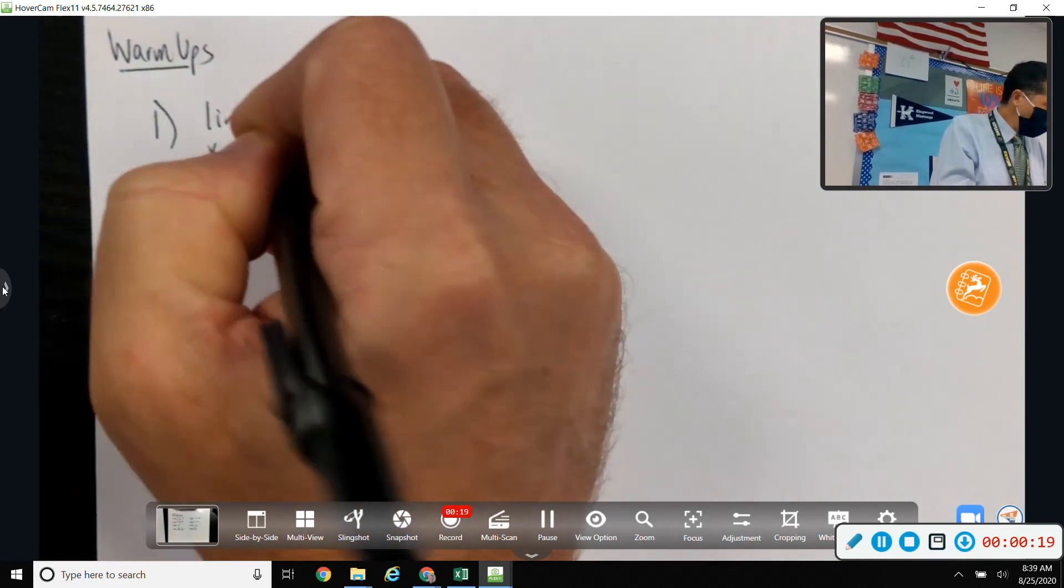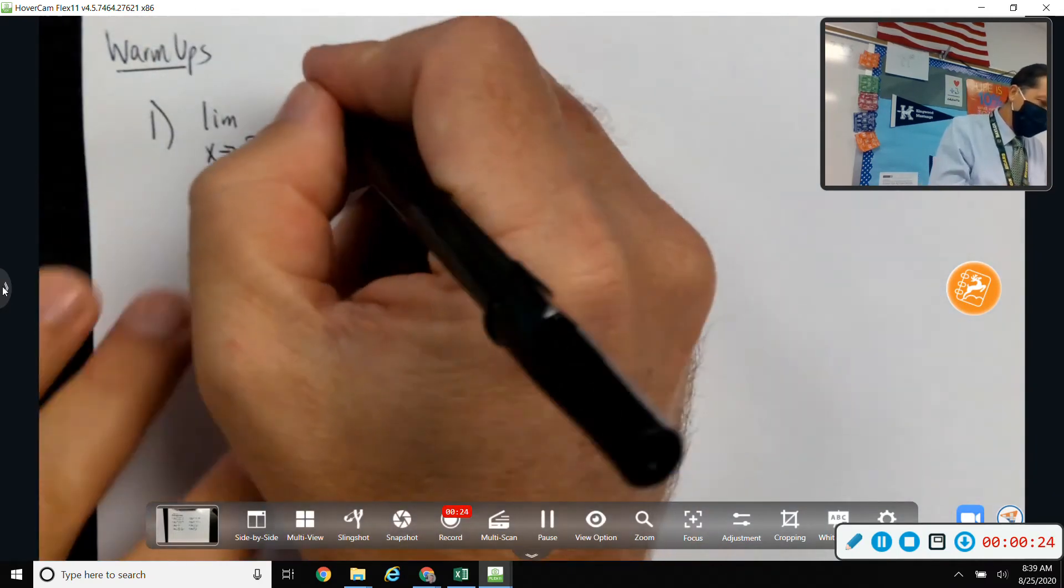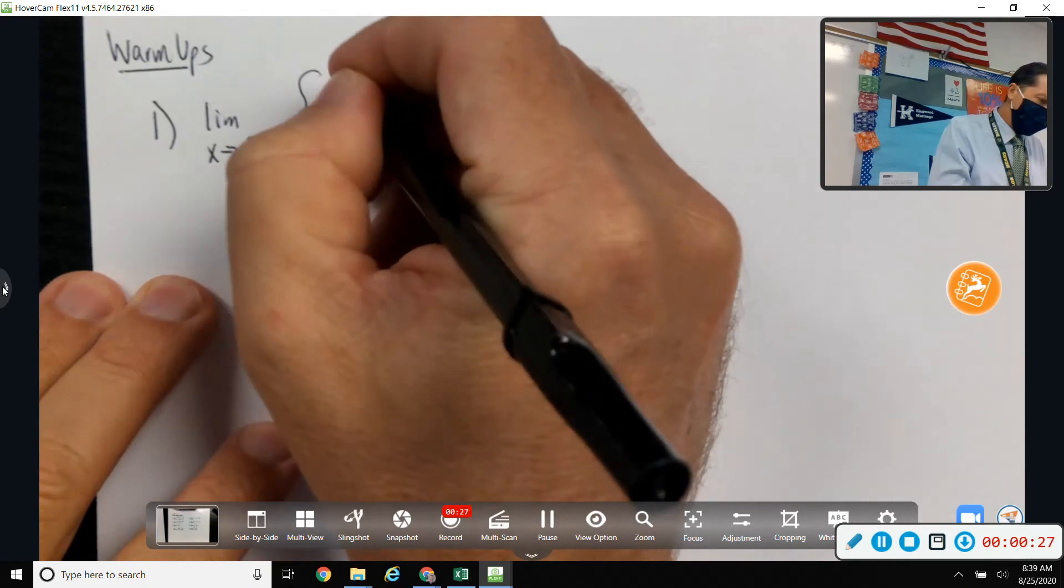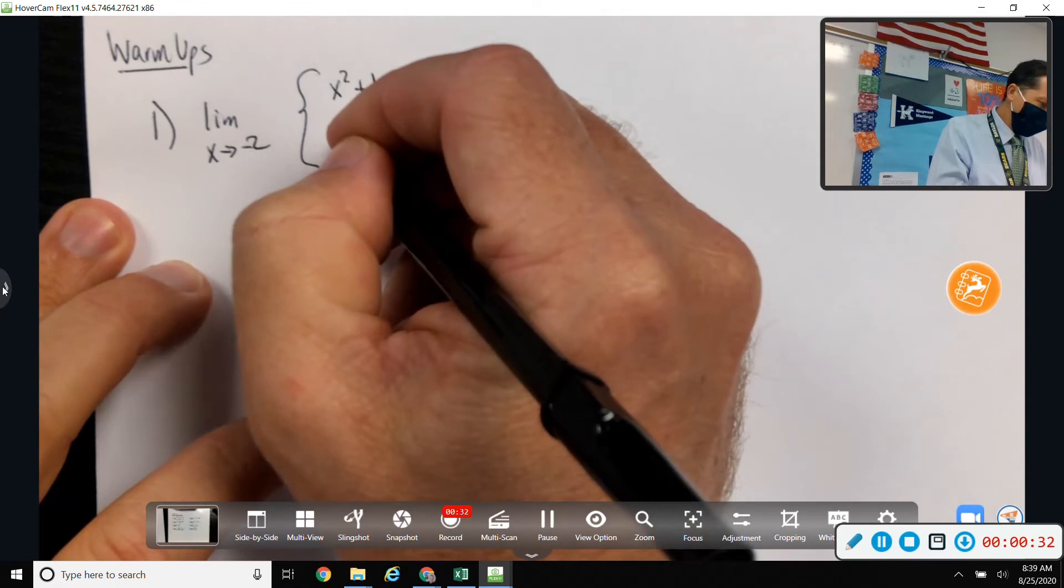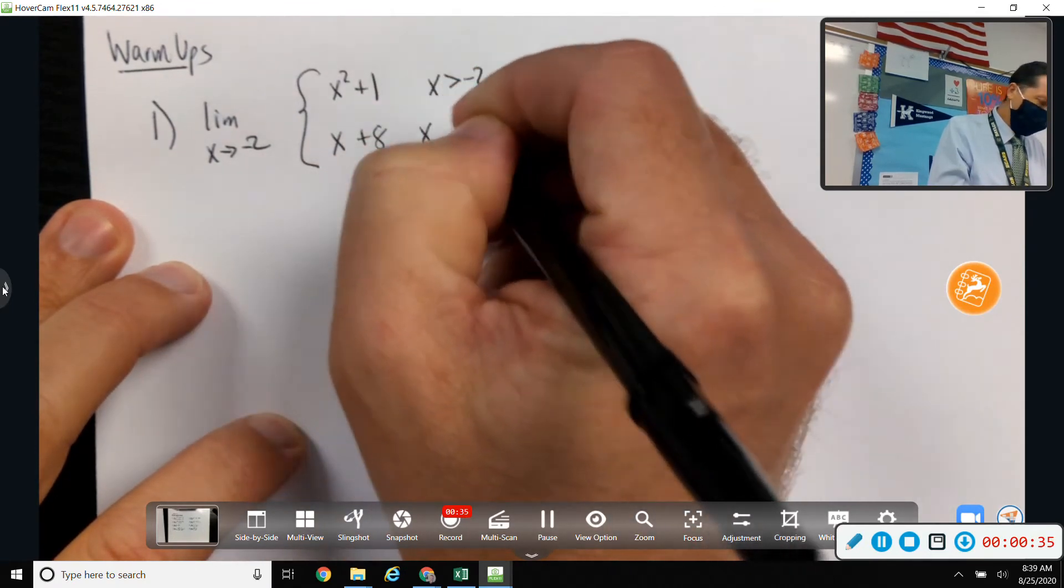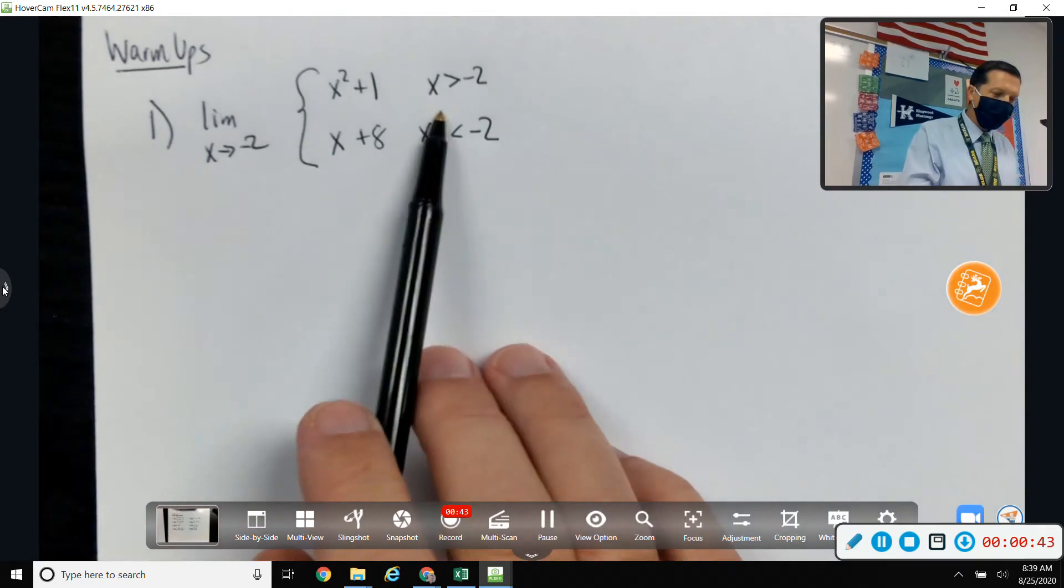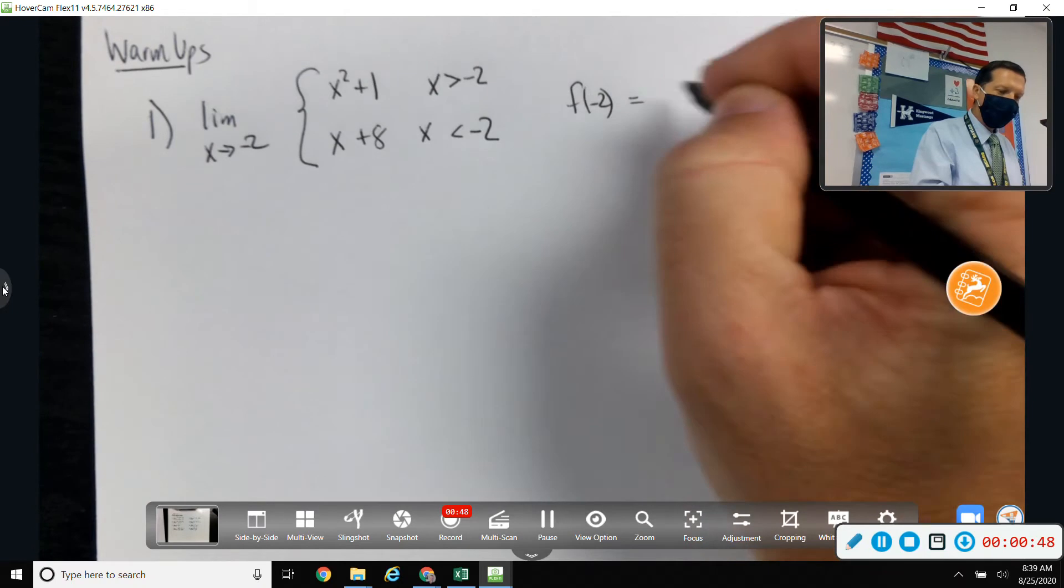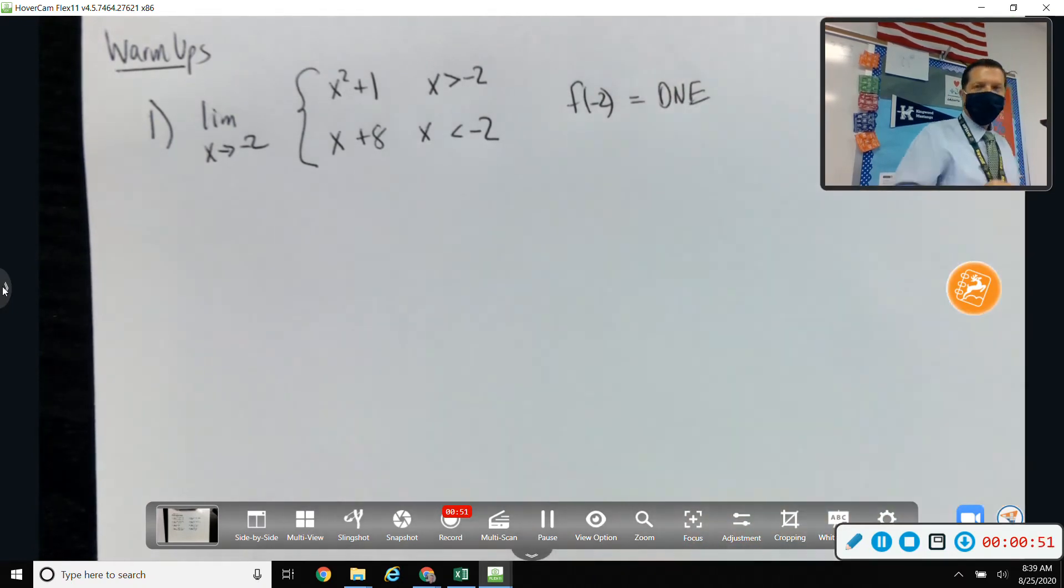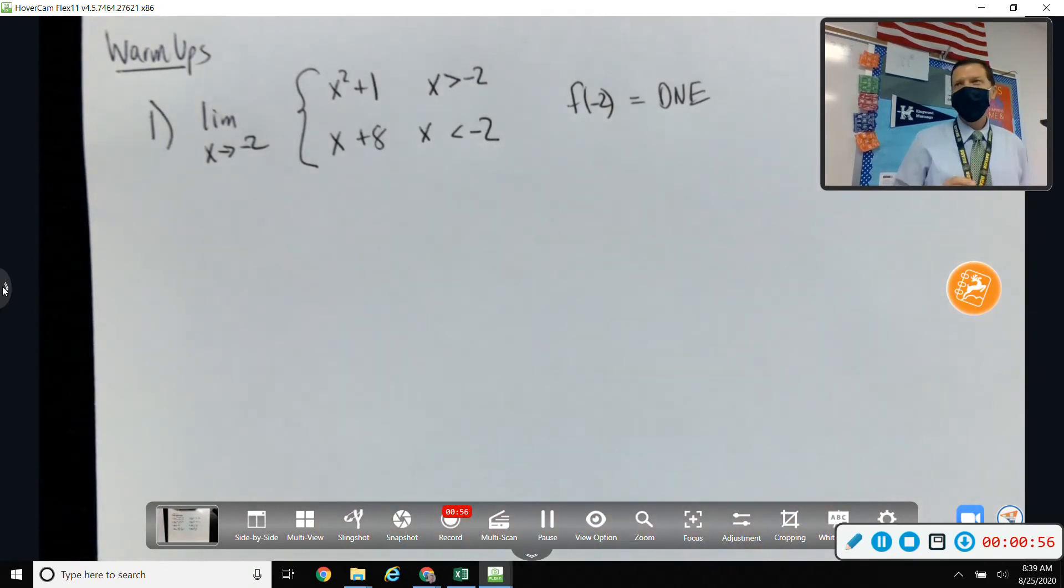Limit as x approaches negative 2 of this piecewise defined function: x squared plus 1 when x is greater than negative 2, x plus 8 when x is less than negative 2. This is definitely not a direct substitution one because there's nowhere to substitute it in. In fact, this function at negative 2 is not even defined. It doesn't exist. So that's just kind of a side note that neither one of those has an equal sign, so the function doesn't exist anywhere, but the limit still might.